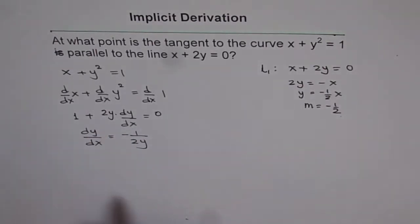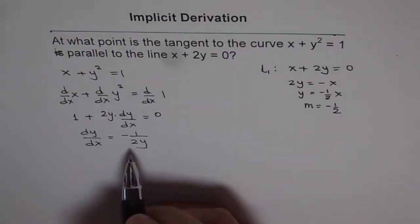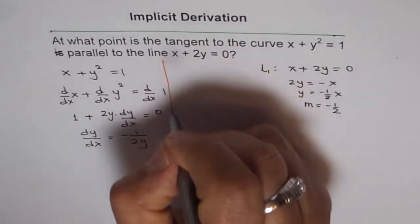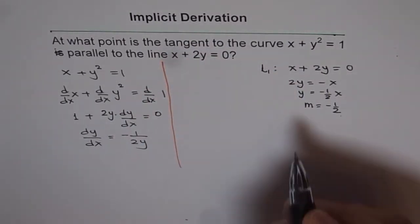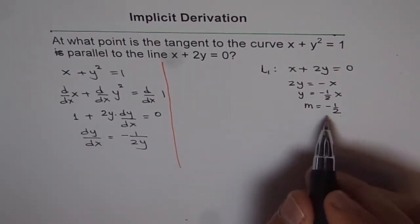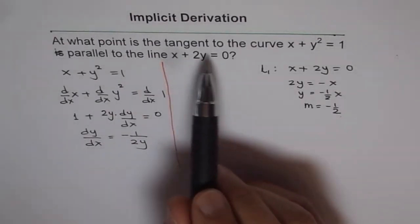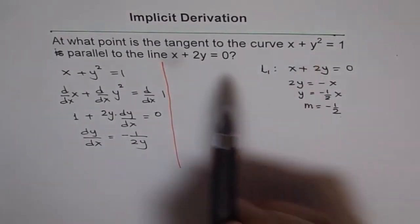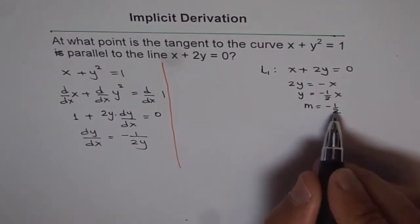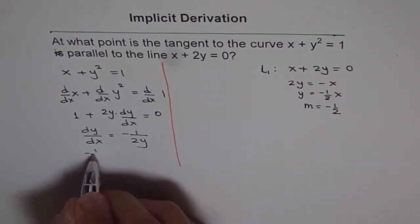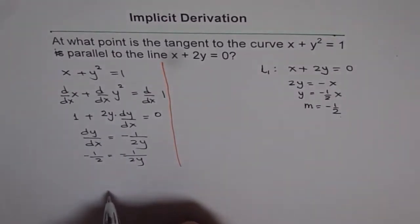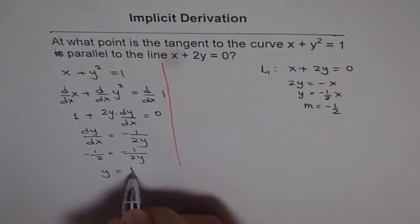So that is the slope at any point on this curve. Now we will equate this dy/dx to minus half, since we need to find a point whose tangent has the same slope as that of the line — that is the meaning of parallel. So we equate dy/dx as minus half: minus half equals minus 1 over 2y. This implies y equals 1.